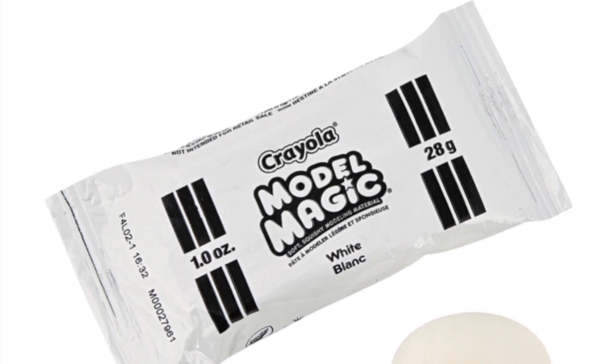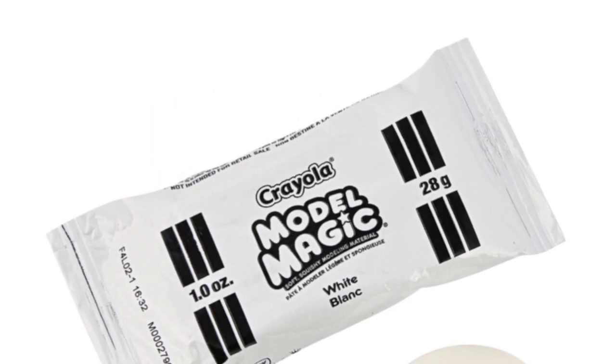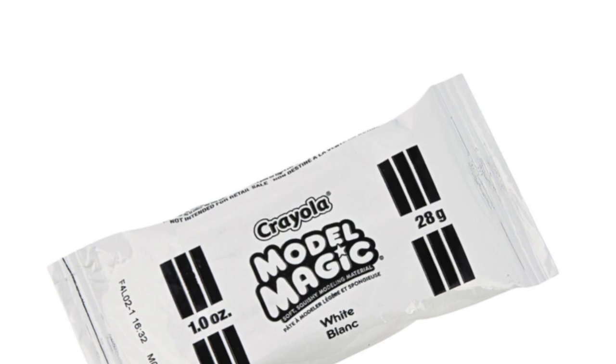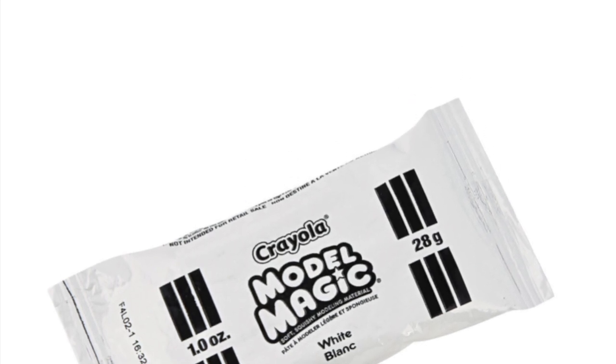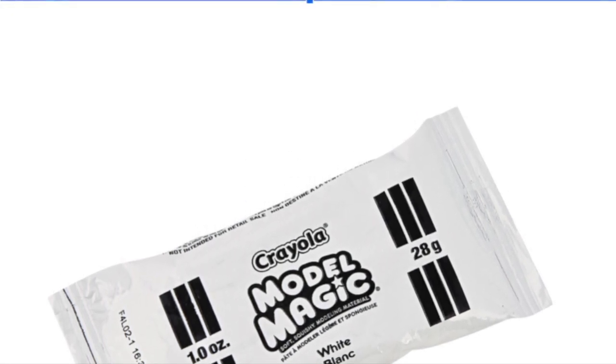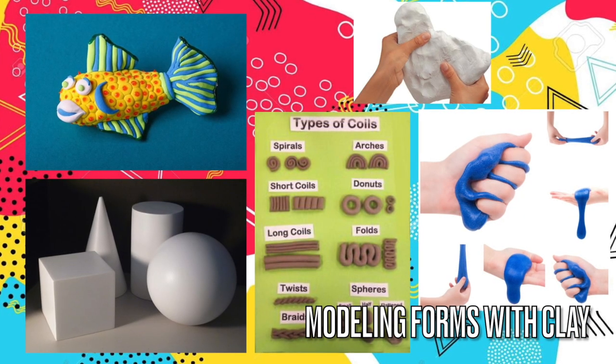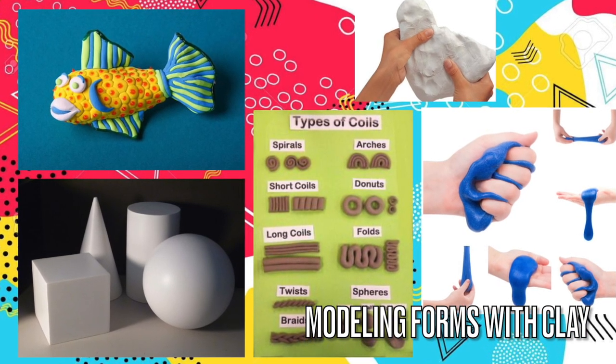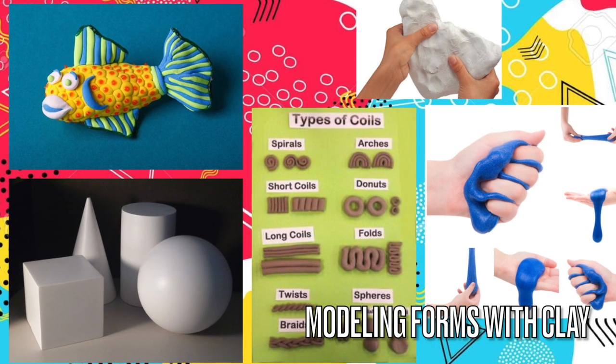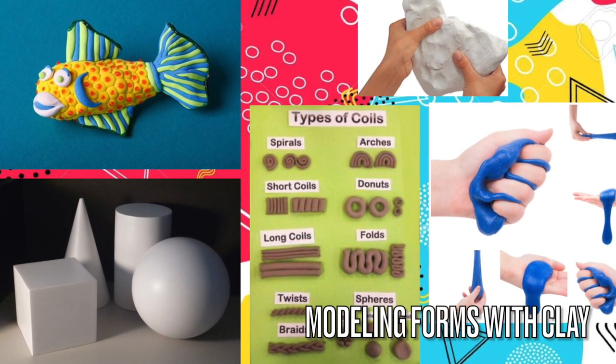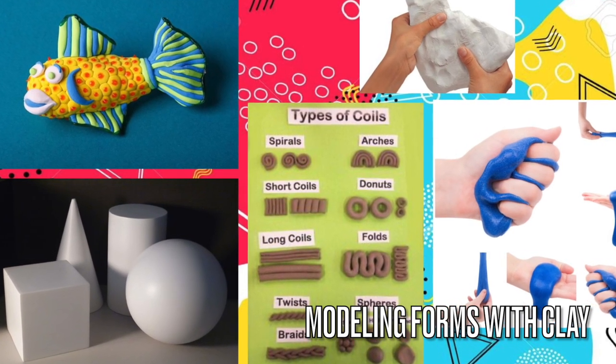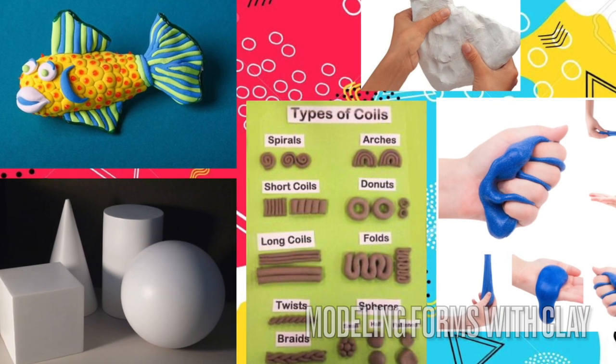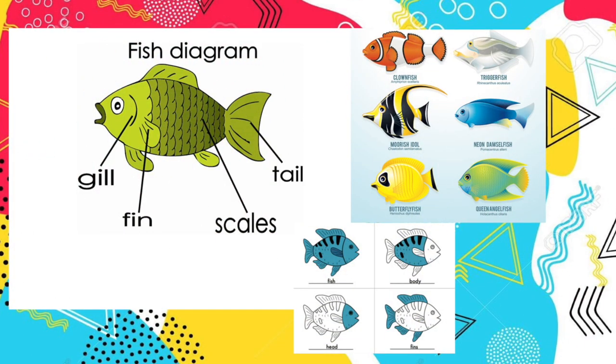Today we are going to form a sculpture of a fish using model magic. Model magic is a soft, squishy, marshmallowy air-dry clay that resembles play-doh. Using the model magic we can create forms by molding the clay into various shapes and lines by squishing, rolling, and flattening it with our hands.